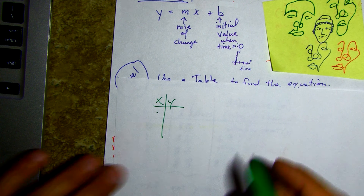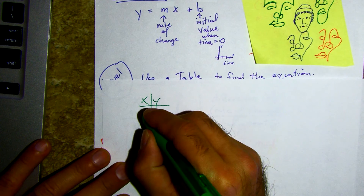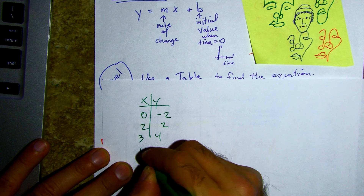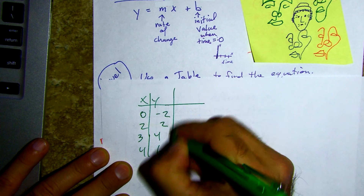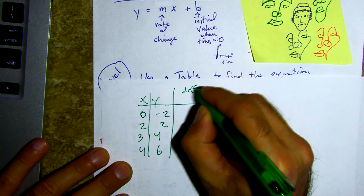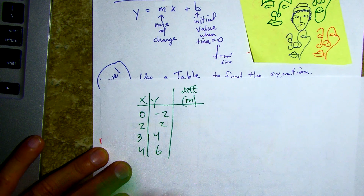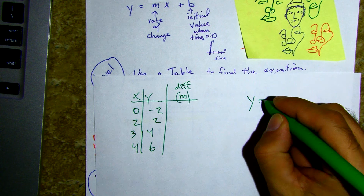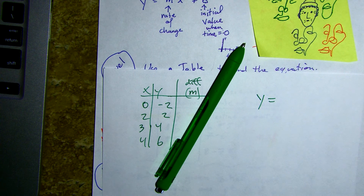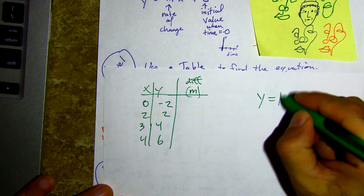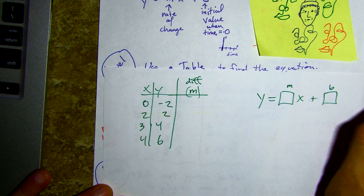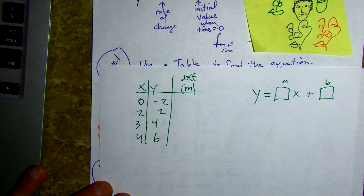Okay, so we have zero, negative two, two, two, three, four, four, six. We're going to make another column because the difference is going to be our rate of change — we're going to find the slope. Just remember we're plugging in our m and our b value. Here's our m, here's our b, and once we find that we have our linear equation.